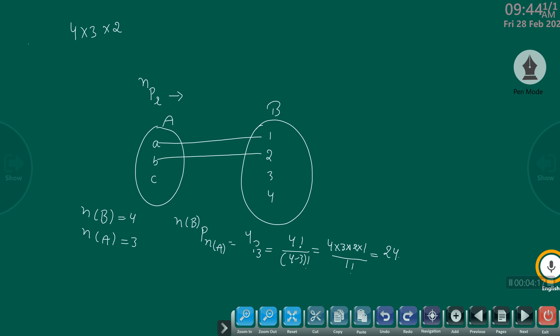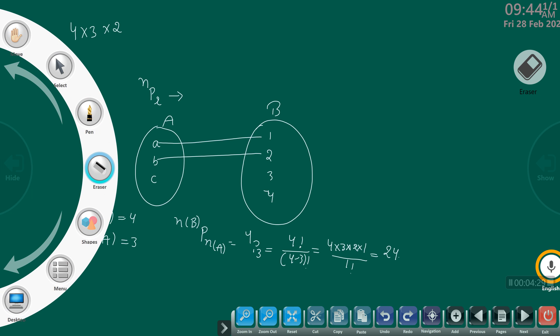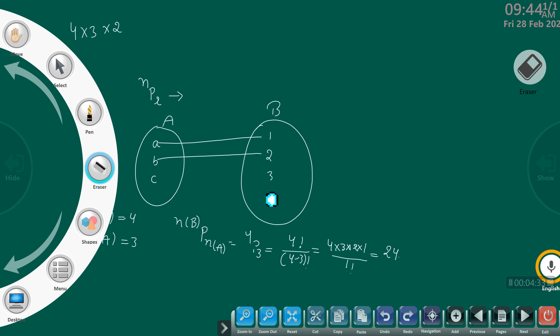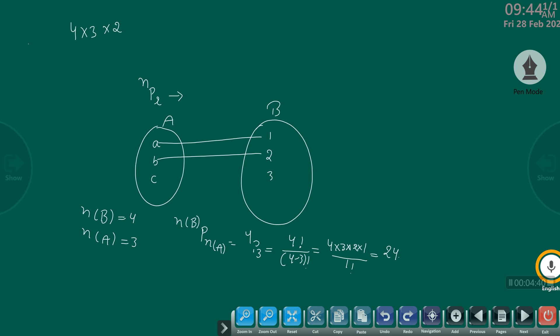Suppose there is no 4 element present here. Then you have the number of elements in B is 3 and the number of elements in A is also 3.